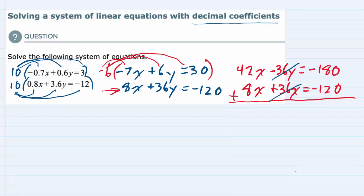I've got the -36y and the 36y cancel, leaving me on the left-hand side with 42x + 8x, which is 50x. And the right-hand side, -180 + -120 gives me a -300.